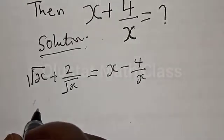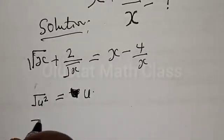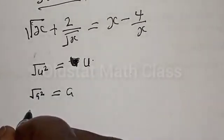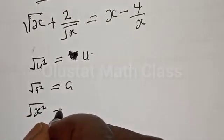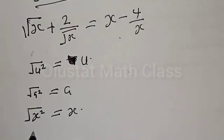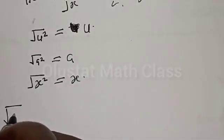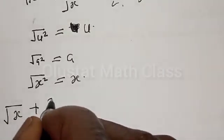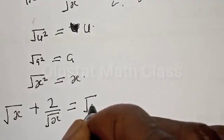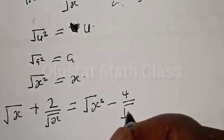We know that square root of u squared is the same thing as u. Also, square root of s squared is the same thing as x. Therefore, anywhere you see x from this given equation, you substitute with square root of s squared. Our equation will now become square root of s plus 2 divided by square root of s equal to square root of s squared minus 4 divided by square root of s squared.